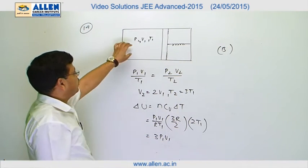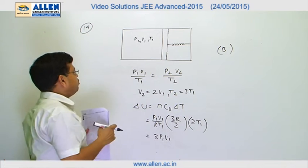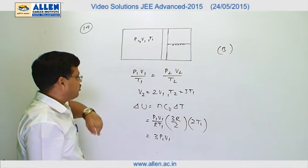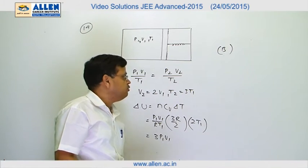We can calculate from the initial data because initially the pressure of the gas was P₁, volume was V₁, and temperature was T₁. So if we put the values here, we will get ΔU is equal to 3P₁V₁.